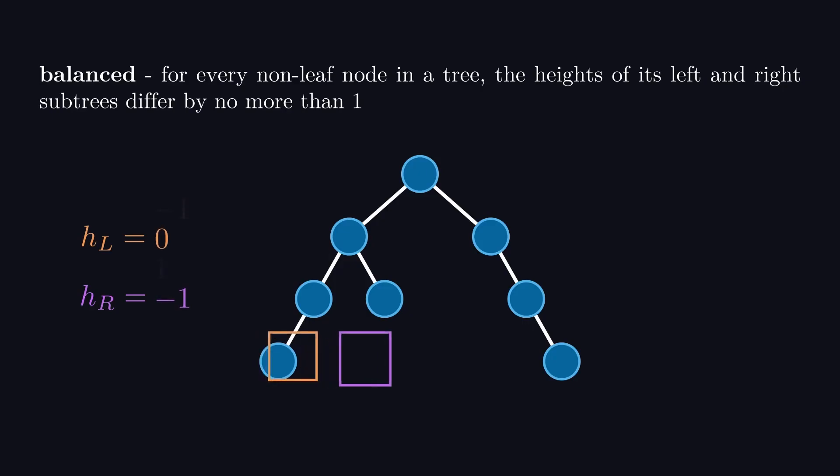However, moving on to the right side, this left subtree has a height of negative 1, but the right subtree has a height of positive 1, meaning their difference is 2. Therefore, this tree is unbalanced. If we wanted to balance it, we could add another node here, so that the left subtree would have a height of 0, and their difference would only be 1.